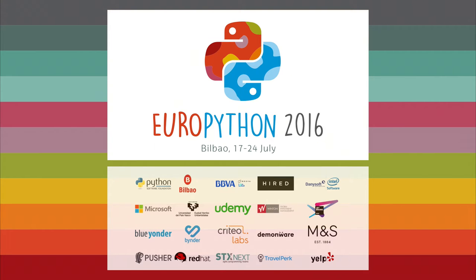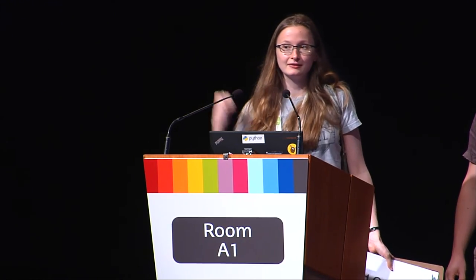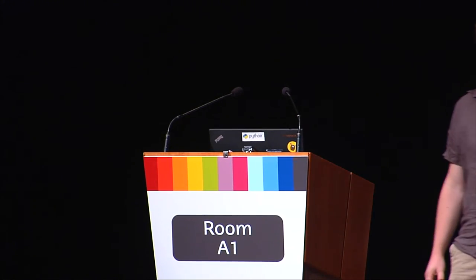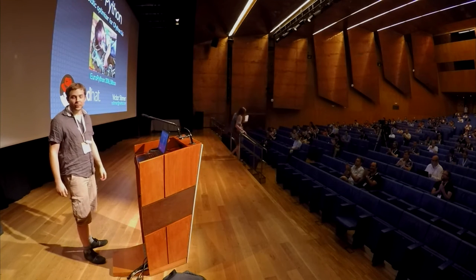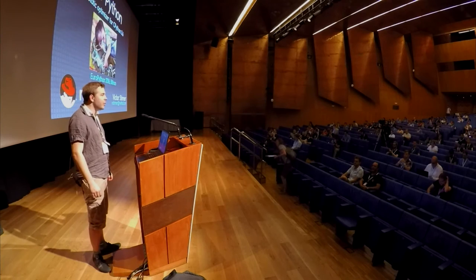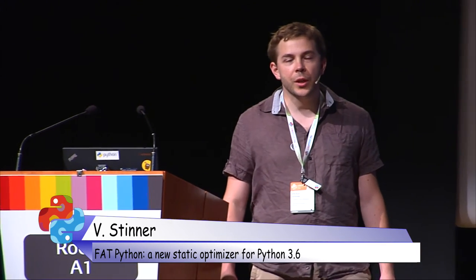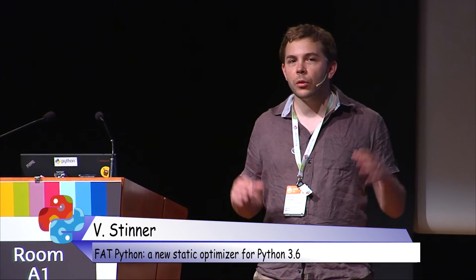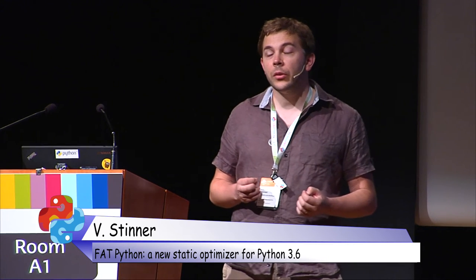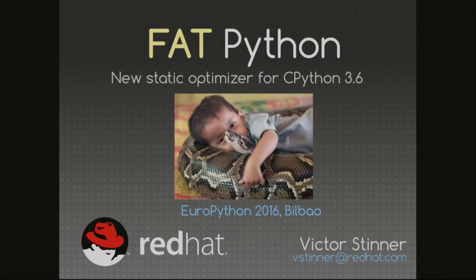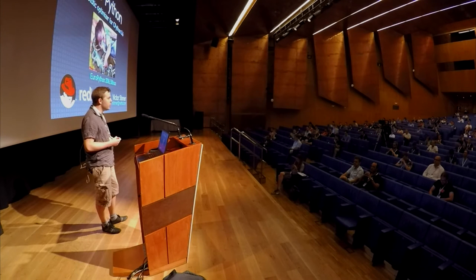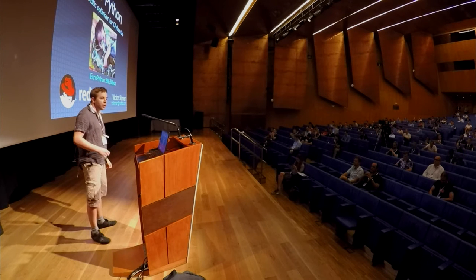Welcome to the first talk today on Fat Python by Victor Stinner. My name is Victor Stinner. I'm currently working for Red Hat, working on the OpenStack project. One part of my work is to port OpenStack to Python 3 — I've ported more than 90% of the projects. I'm also a Python core developer for about five years, and today I'm here to present a new project called Fat Python.